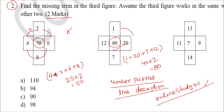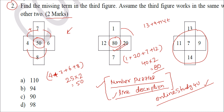The logic is fixed: either multiply, subtract, or add the outside numbers to get the middle number. For the third figure: 13 plus 9 plus 14 plus 11 — summing step by step: 5, 14, 28, then 47 — and multiplied by 2 gives 94. So option B is the correct answer for question 2. This is how you solve these problems easily in the examination.